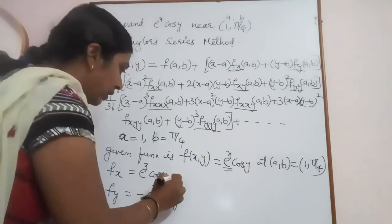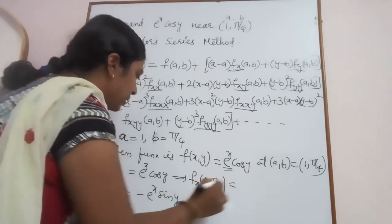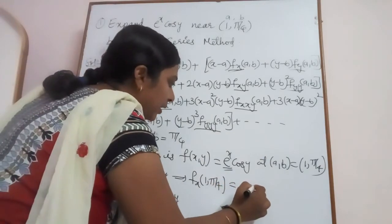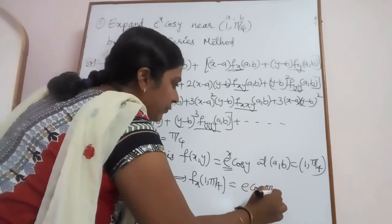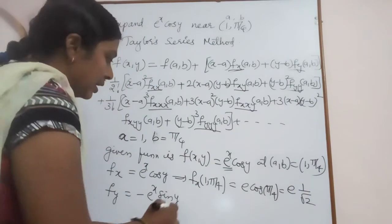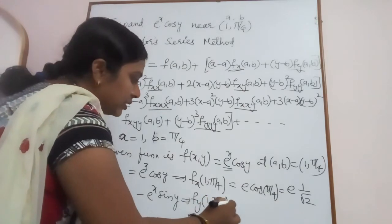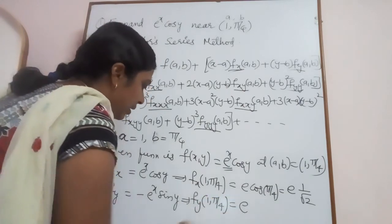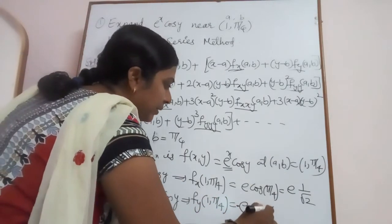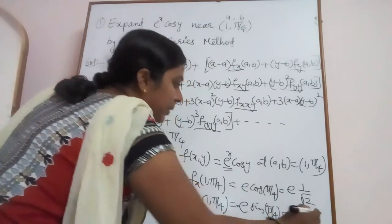At the particular point: f_x(1, π/4) = e¹ · cos(π/4) = e · (1/√2) = e/√2. And f_y(1, π/4) = −e · sin(π/4) = −e · (1/√2) = −e/√2.